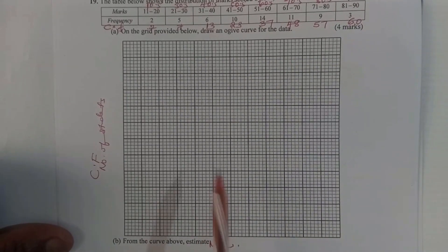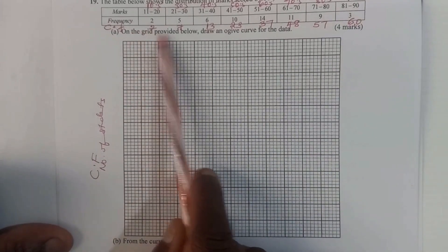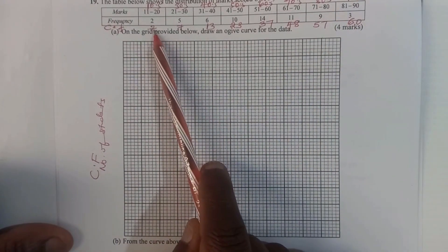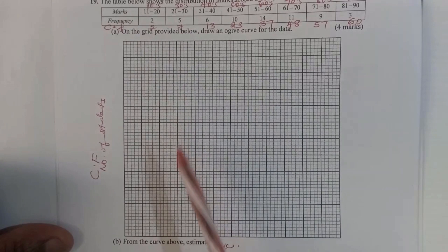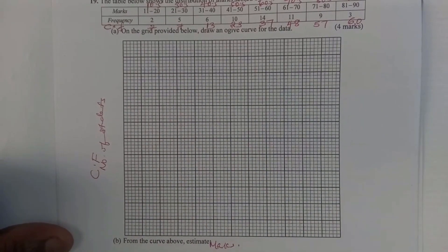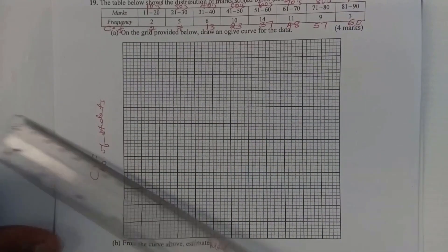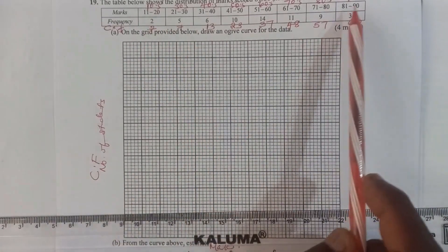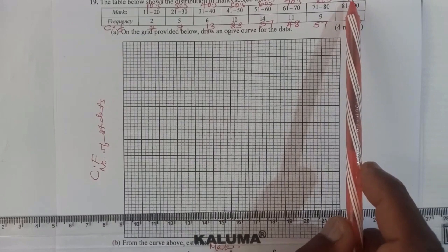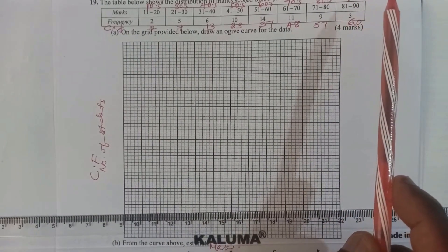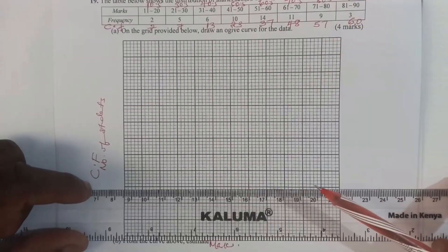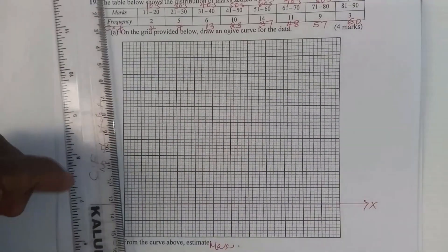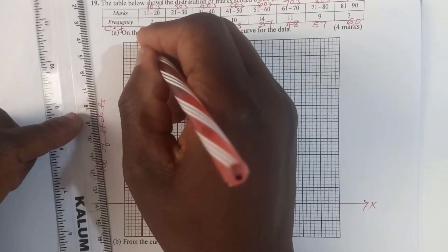So we need to plot these — decide on the scale to use. On the y-axis the highest value is 60 and the lowest is 2, so I can use 1 cm to represent 15 students. For the x-axis, the lowest is 10.5 and the highest is 90.5, so I can use 1 cm to represent 10. Now let me draw the axes: the x-axis and then the y-axis.